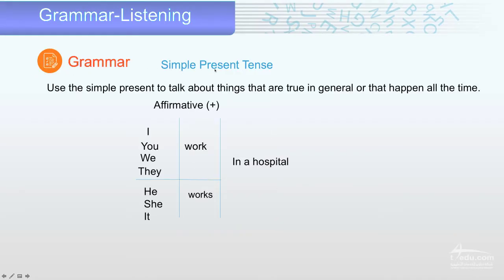Today we have simple present tense. We use the simple present to talk about things that are true in general, like 'water is liquid' — it's true in general — or things that happen all the time.